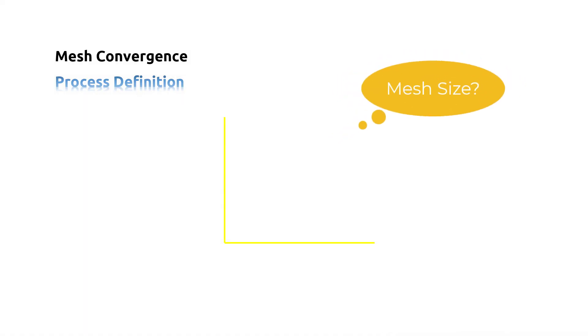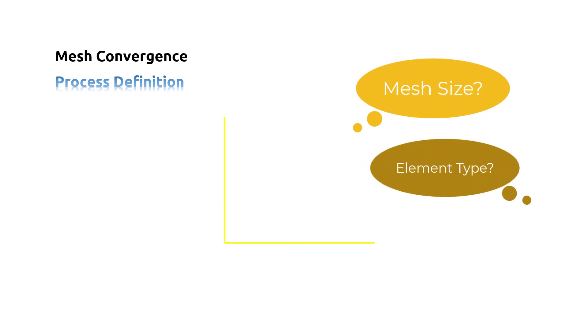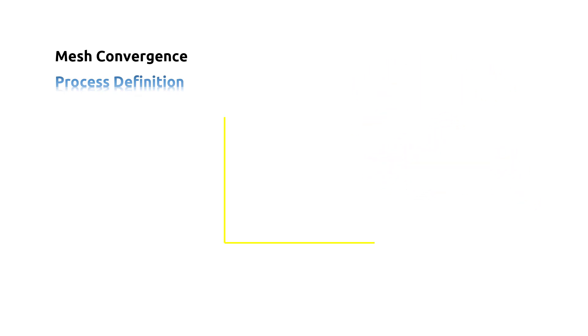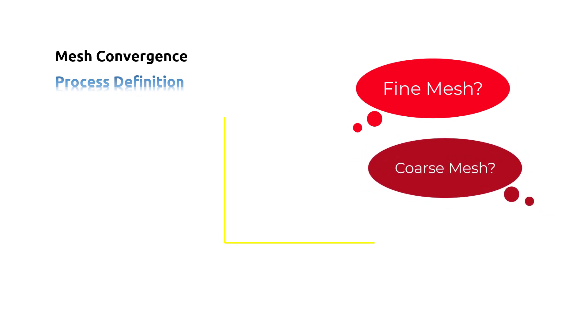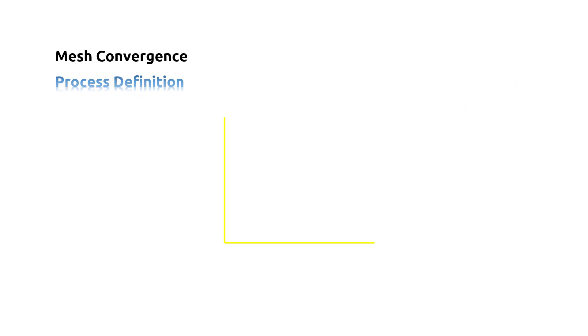The solution of FEA is highly dependent on mesh size and the type of elements. It is important that you use a sufficiently refined mesh to ensure that the results from your Abaqus simulation are acceptable. The numerical solution provided by your model will tend toward a unique value as you increase the mesh density.